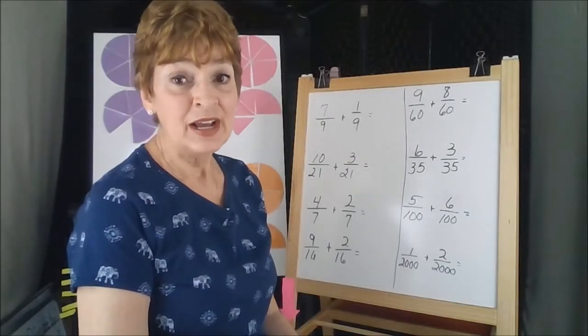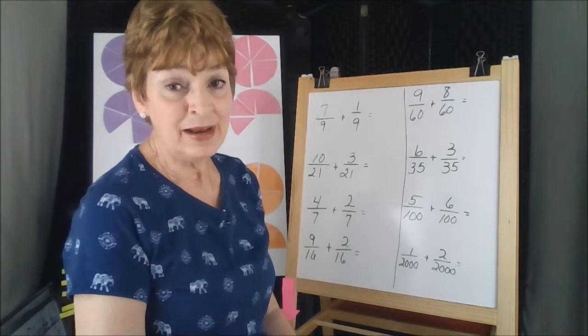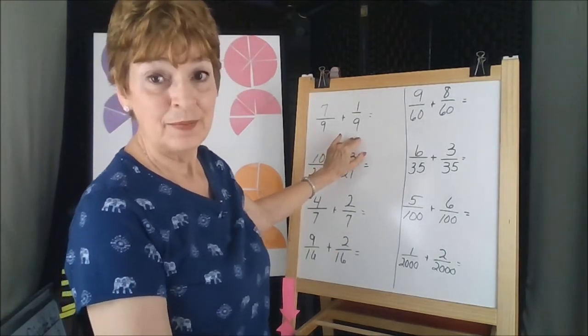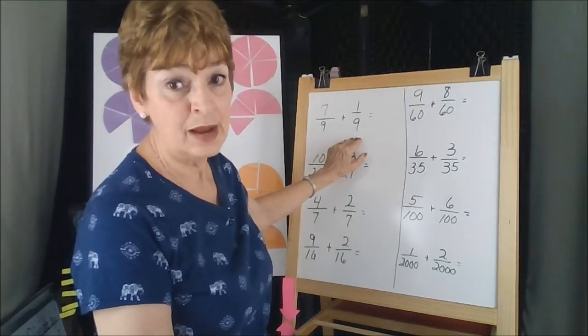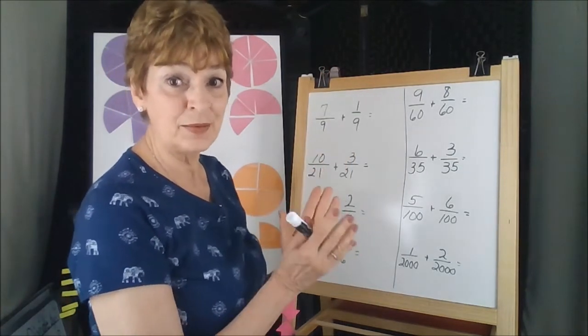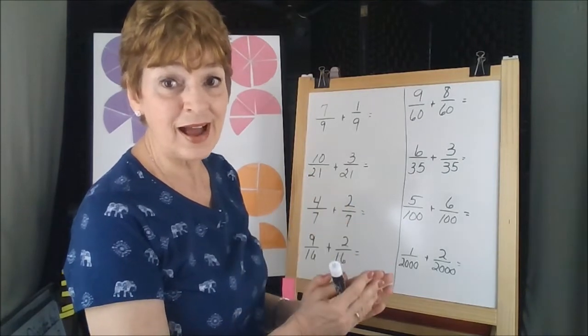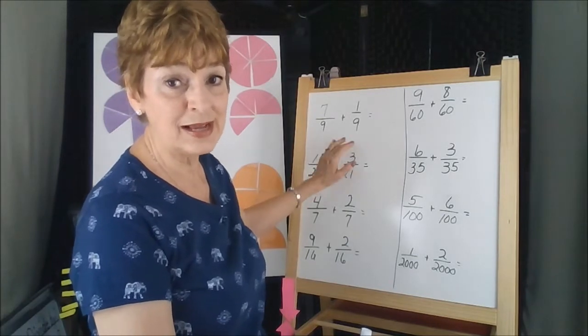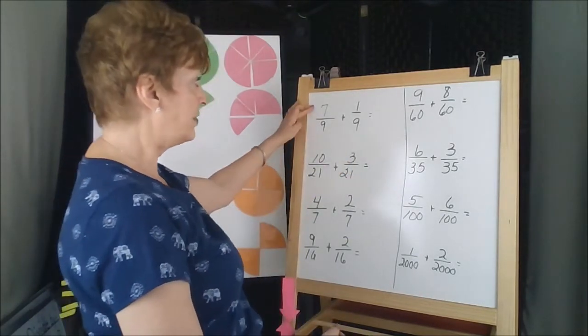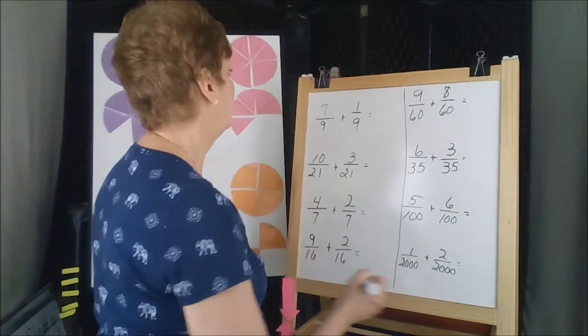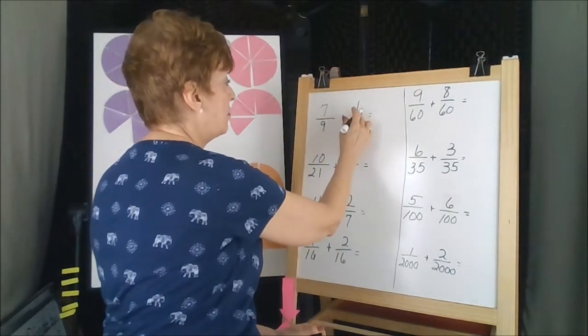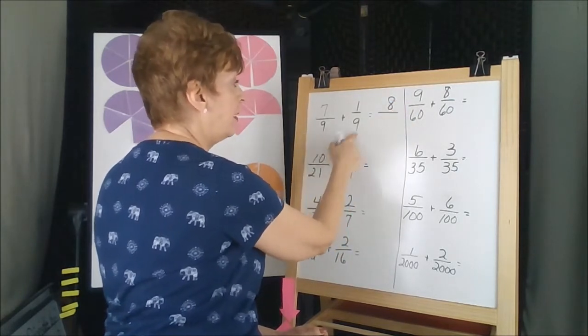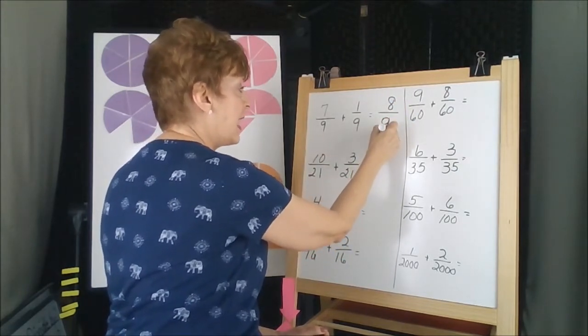When adding fractions, as long as the denominators are the same, the numbers on the down part, as long as they are the same number, we know that the size of the piece that we're talking about is the same size. So in order to add fractions when you have the same size piece, all you have to do is add the top numbers. Seven plus one is eight, and keep the bottom number because it's the size of the piece.